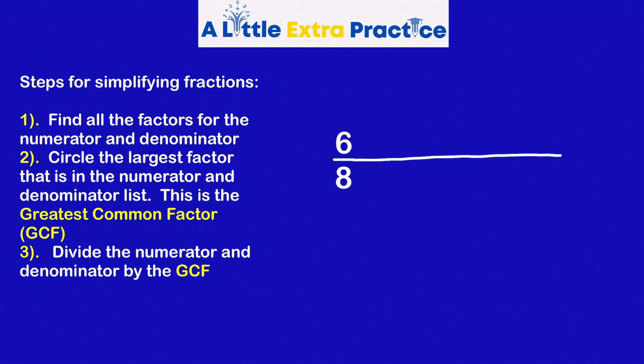Six out of eight. Go ahead and simplify this. They're both even, so they're both going to have two as a factor. First step, find all the factors for the numerator and denominator. Reminder, factors are the numbers that you multiply to get to six or the numbers you multiply to get to eight. So how can I get to six? One times six, two times three. Notice how the numbers get smaller on one side and larger on the other side. In this case, they met.